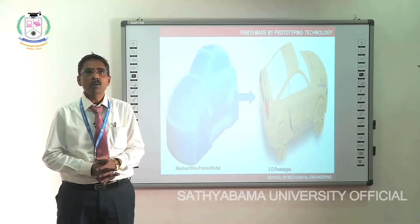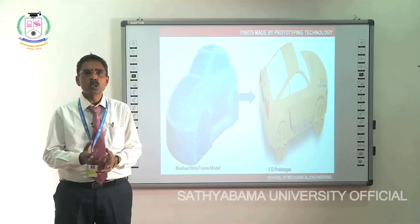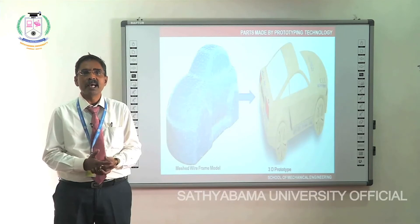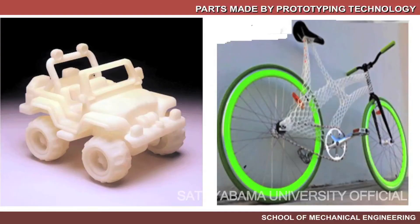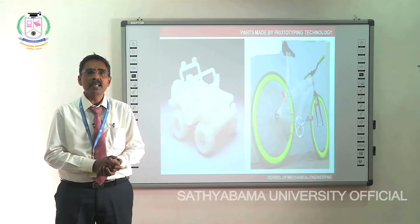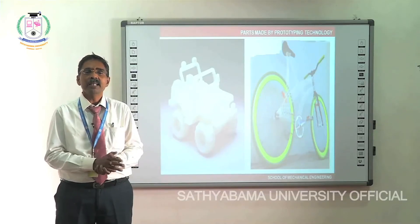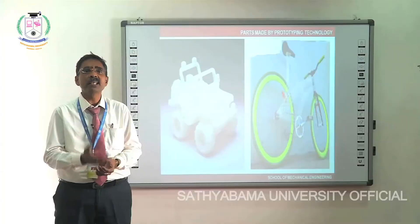A wireframe model of a car can be drawn and converted into a 3D prototype using 3D printing software. This is useful because any changes the customer wants can be done at the initial stage before going to final production. Sample parts include toy models and bicycles. Design corrections are made at the design stage itself, before commercial production begins. Dimensional and design feature changes can be done easily in the RP machine.